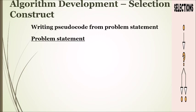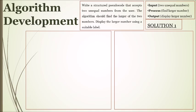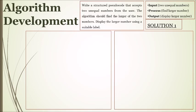Here we're looking at an example showing a full problem statement and how to generate a solution using selection constructs. The problem asks us to write a structured pseudocode that accepts two unequal numbers from the user, finds the larger of the two numbers, and displays it using a suitable label. From the instructions we identify two entries for input, finding the larger number as the process, and displaying the larger number as output.